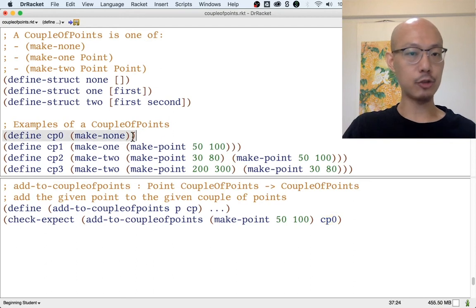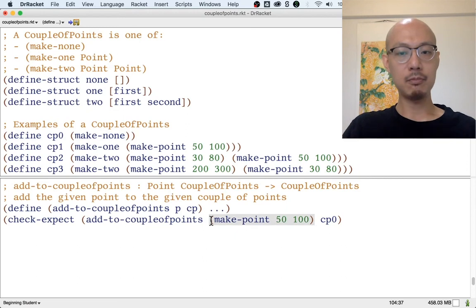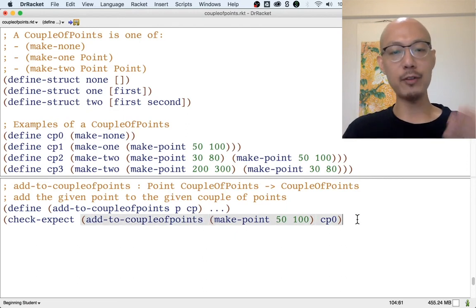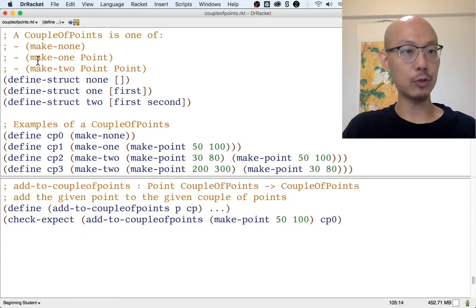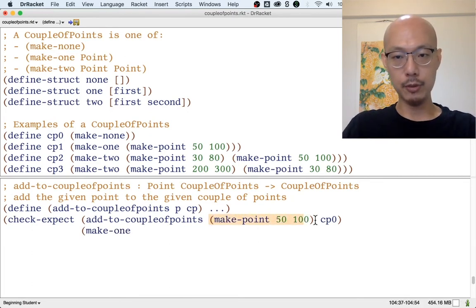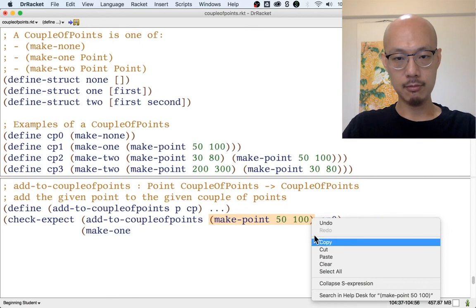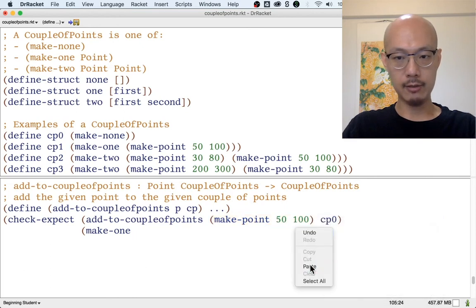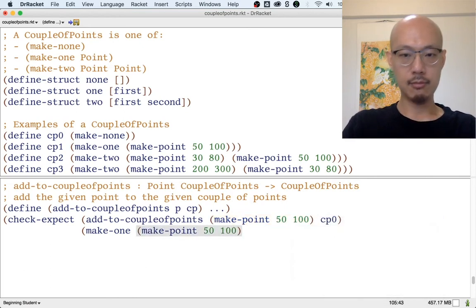CP0 is defined here, it's just make none. So if we have no point to start with and we add this new point, what should we get? Well, if we have no point, and we have the point, then we should get one point, and we have a way to store that. It's a make one, so let's put make one, and then this new point, and then that's it.